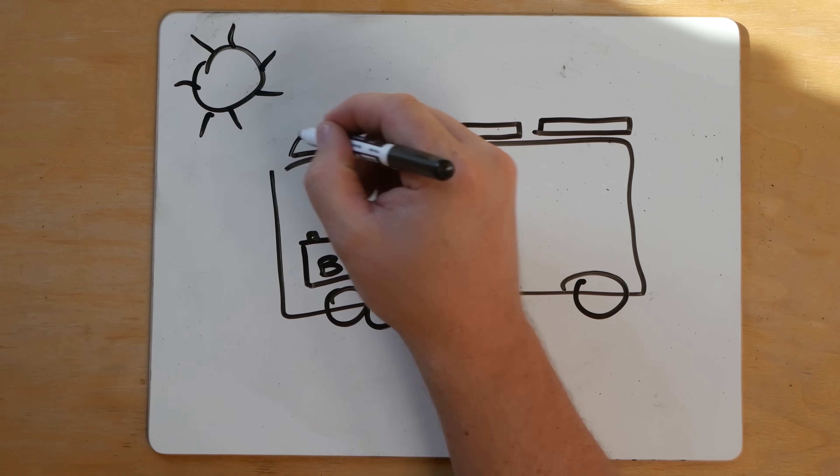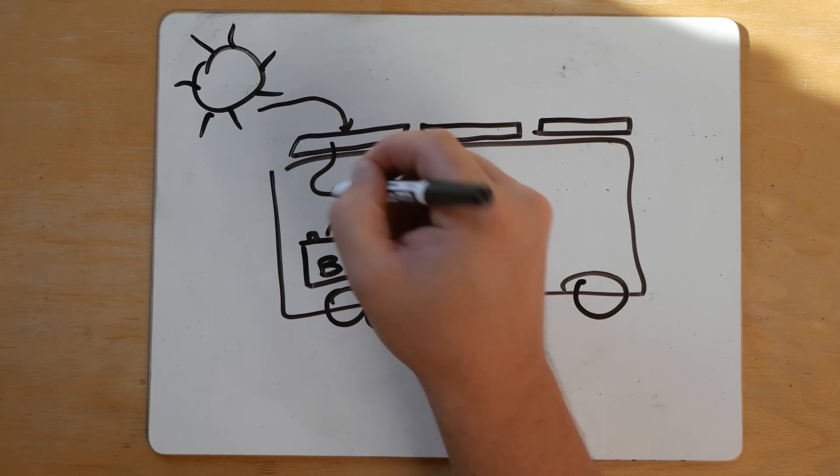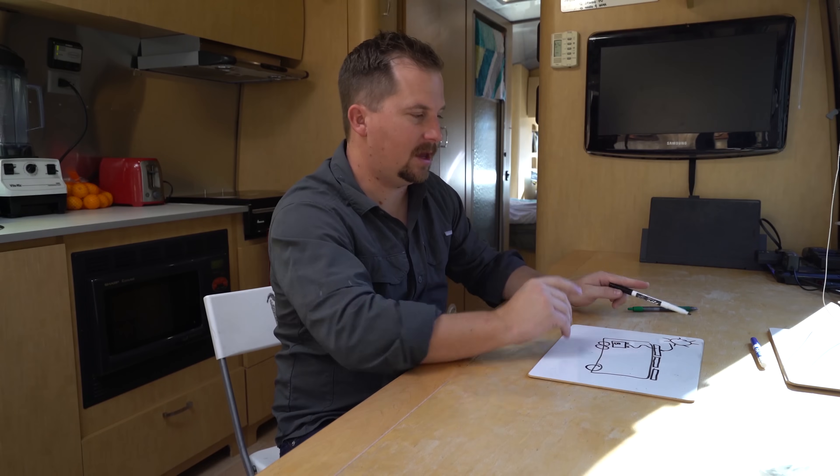It only charges batteries. So your solar panel here takes the sunlight, converts it into energy to charge your batteries. That's it. Super simple.